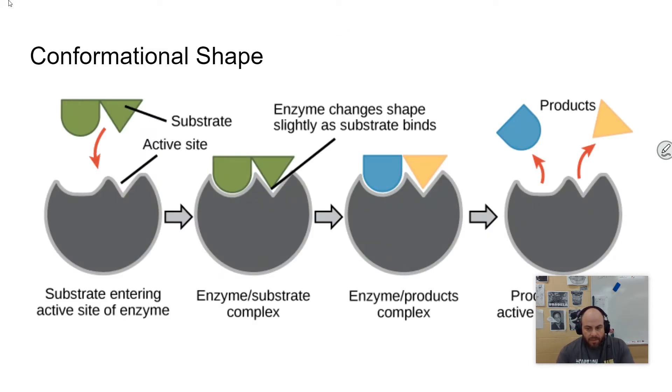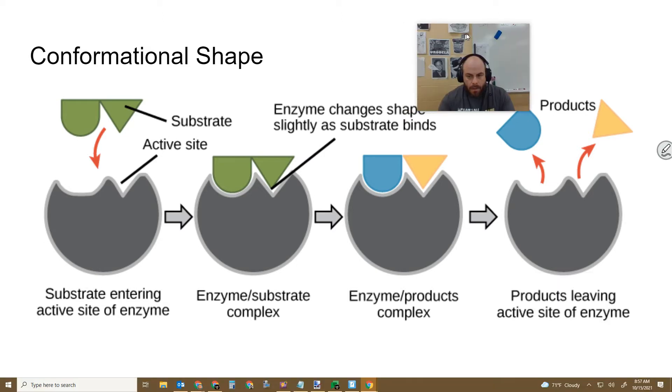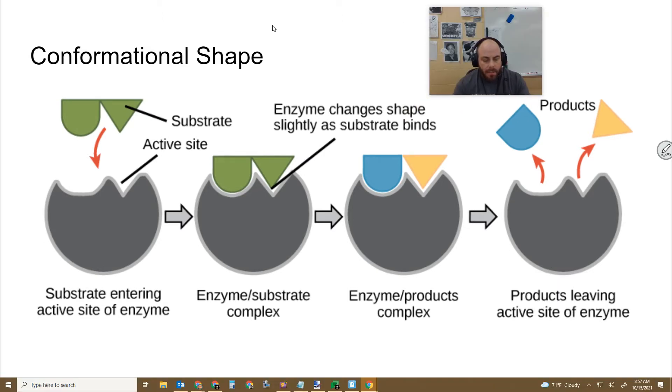One big concept here that we have to look at is this idea of conformational shape. Conformational shape is basically just another word for the tertiary shape of a protein. This is the shape that the enzyme makes when it is going to do the work. So its protein is made. This has an active site for the substrate. And this particular enzyme is taking these two things apart and making some products.